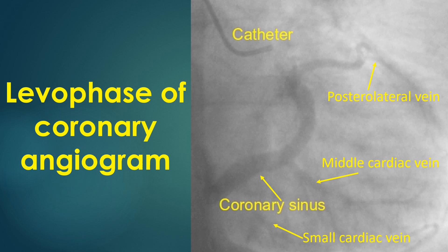After filling the coronary arteries, the contrast drains into the coronary venous system, finally opacifying the coronary sinus which drains into the right atrium. The vein seen in the middle of the image is the middle cardiac vein, and that at the left cardiac border is the posterolateral vein. A small inconspicuous vein seen behind the coronary sinus label is the small cardiac vein.